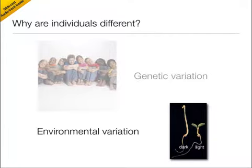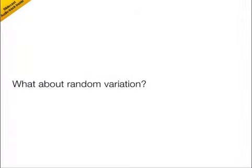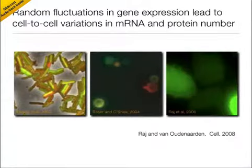But what if we could control for genetic and environmental differences? If we had a set of genetically identical organisms grown in a homogenous environment, would we still see differences between individuals? In other words, what about random variation? As it turns out, researchers have recently shown that the intrinsically random nature of the biochemistry involved in transcription and translation can lead to dramatic cell-to-cell variability in gene expression, even in genetically identical populations of bacteria, yeast, and mammalian cells.